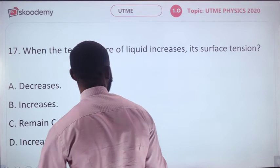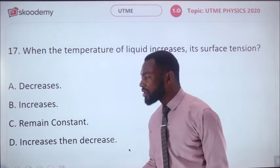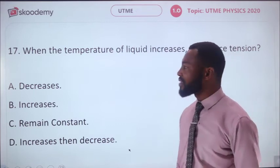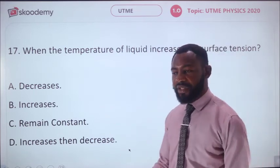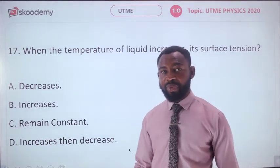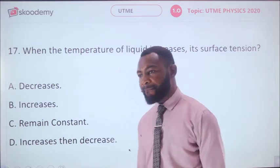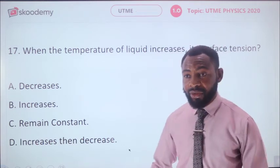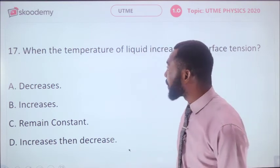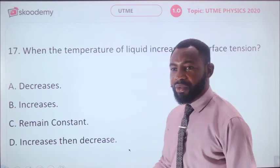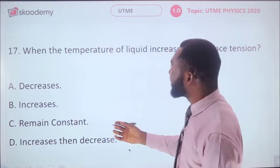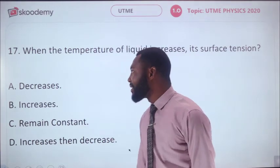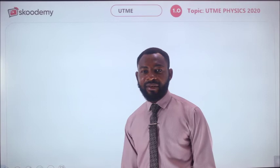Question 17: When the temperature of a liquid increases, its surface tension — decreases, increases, remains constant, or increases then decreases? Surface tension can be reduced by adding detergents or by boiling. As temperature increases, surface tension decreases. The correct answer is A: it decreases.